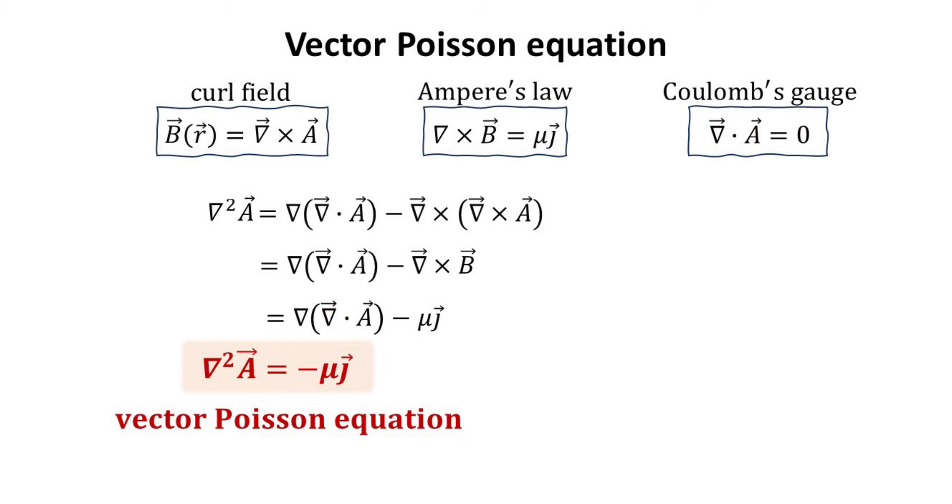With this, we arrived at the so-called vector Poisson equation, which has the same Laplacian form as the Poisson equation for the electric case.